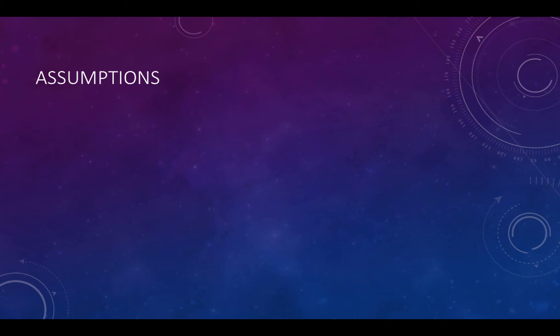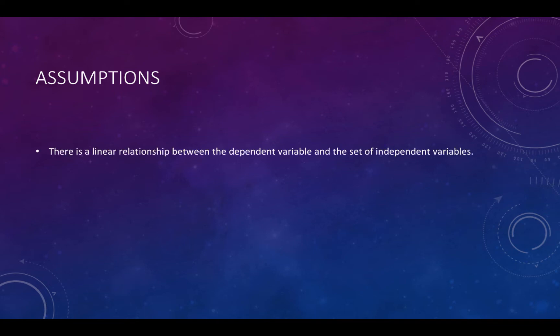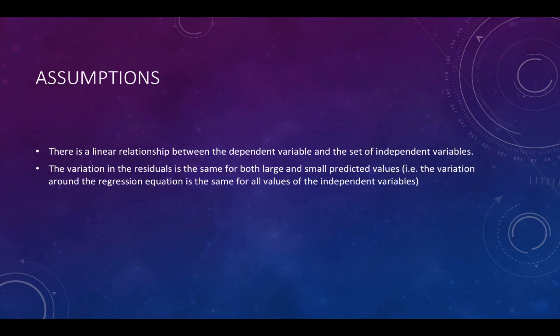There are some assumptions that go into multiple regression. First, there is a linear relationship between y, the dependent variable, and the set of independent variables — we are assuming linear relationships. Second, the variation in the residuals is the same for both large and small predicted values, meaning the variation around the regression equation is roughly the same for all values of the independent variables.